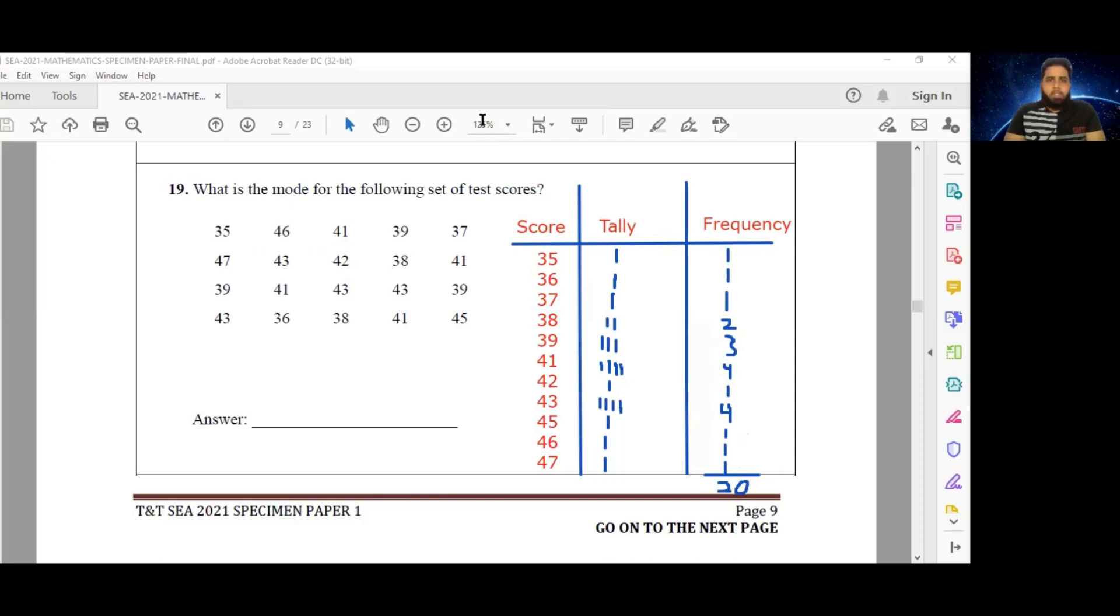So it is possible to have more than one mode, or more than one number that appears the most. So in this case, the numbers 41 and 43, they both appear four times. So both 41 and 43 are the mode because all the other numbers appear less than 41 and 43. So that is our answer for this question.